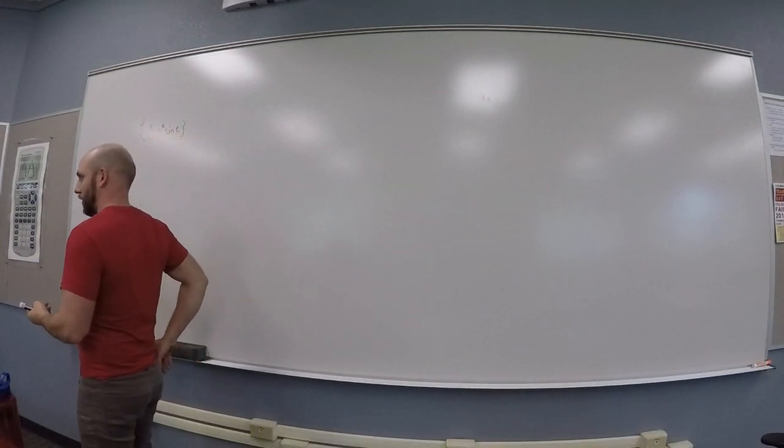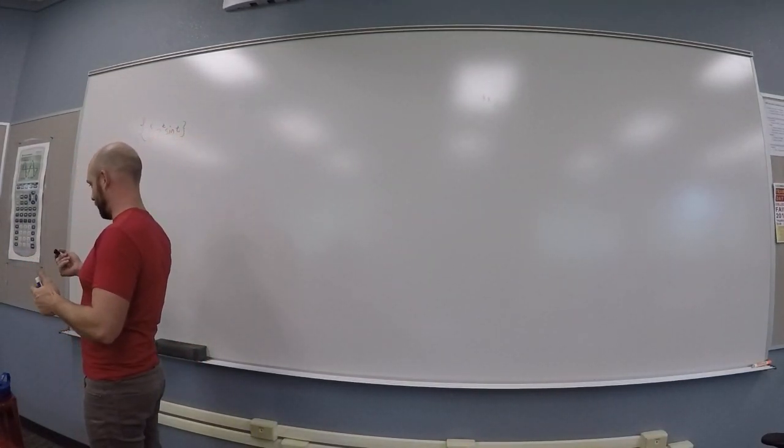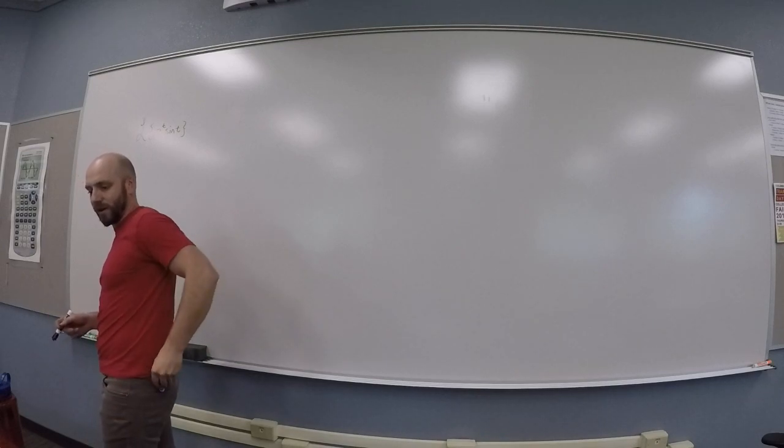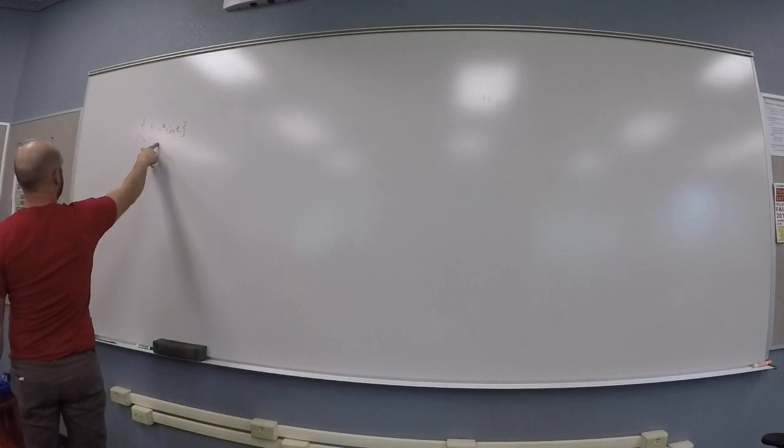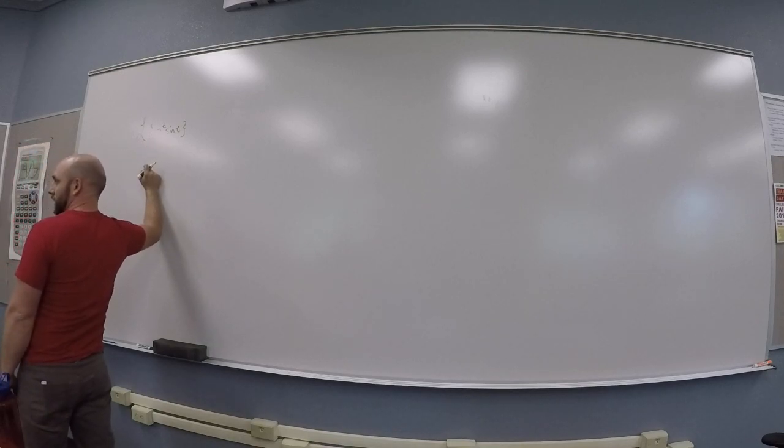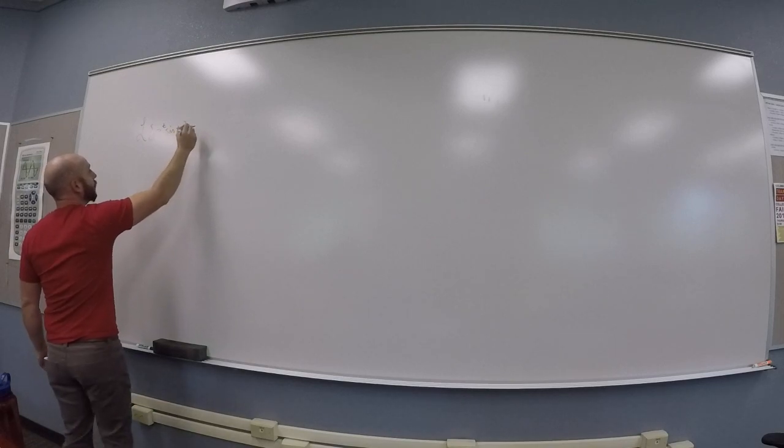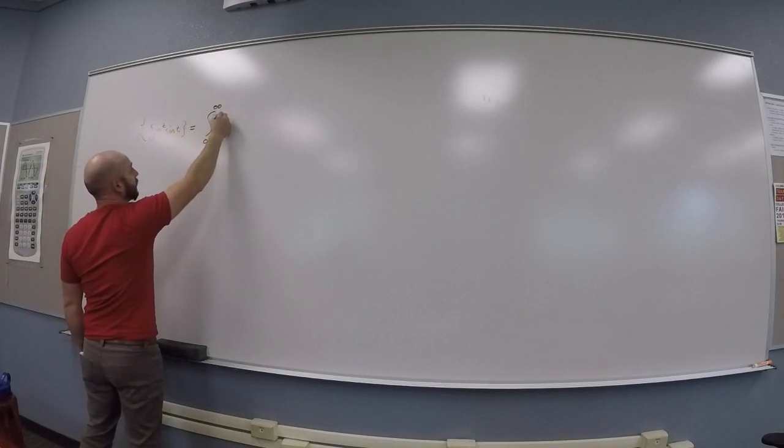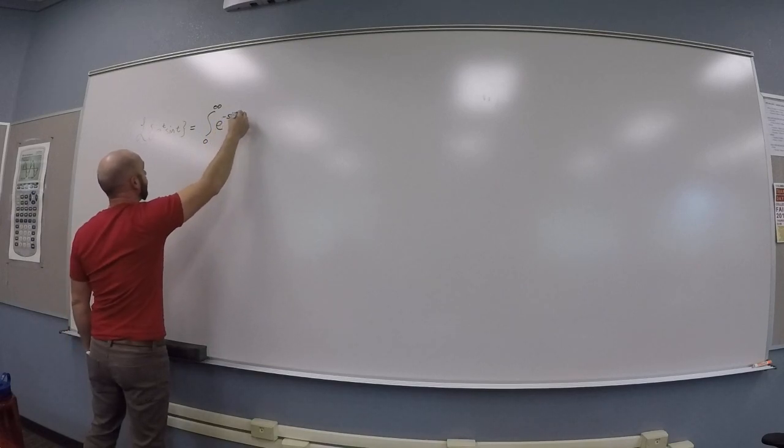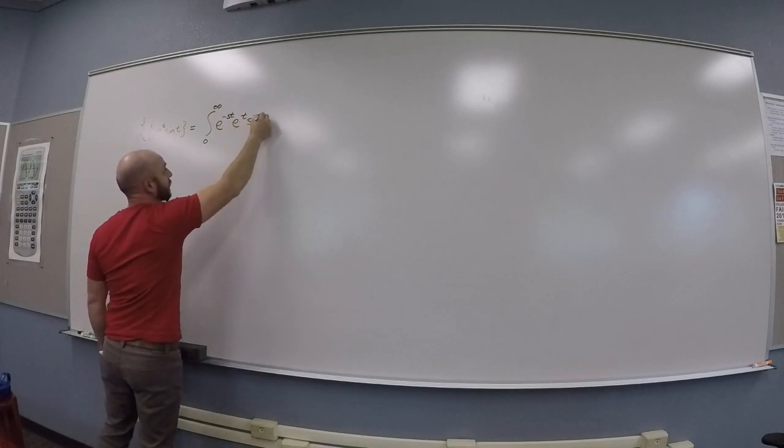So, do you guys remember this trick? Yes. Okay, this is sometimes called the around the corner integration trick, which is, say I want a Laplace transform of e to the t times sine t. So, that boils down to you need to do the integral from zero to infinity of e to the minus st e to the t sine t dt.